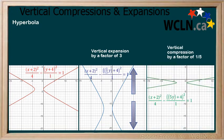Next, we will apply a vertical compression to the original hyperbola by a factor of one fifth. We do this by multiplying y by 5, and we can see how the graph changes accordingly.